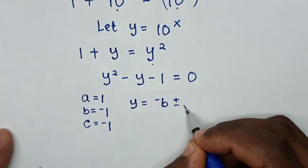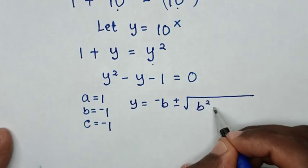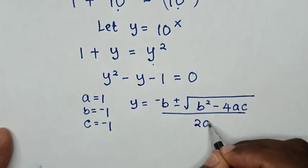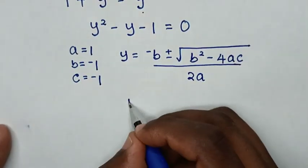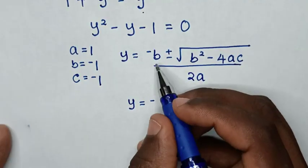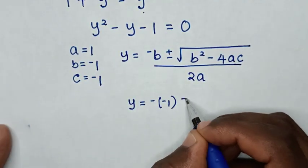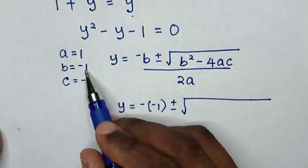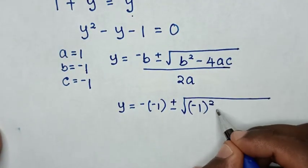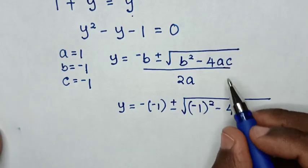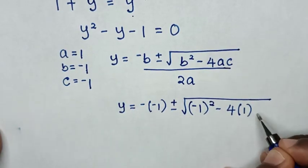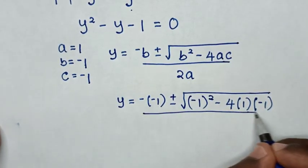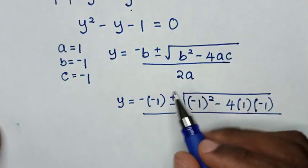y = (−b ± √(b² − 4ac)) / 2a. In the next step, substituting: b is negative 1, a is 1, and c is negative 1. So it becomes y = (−(−1) ± √((−1)² − 4 × 1 × (−1))) / (2 × 1).